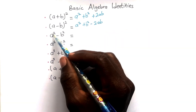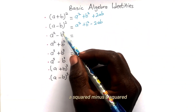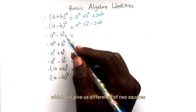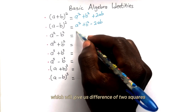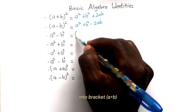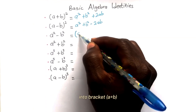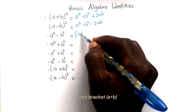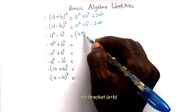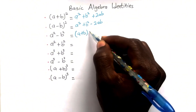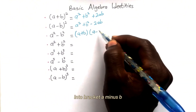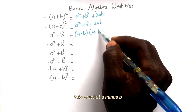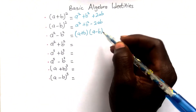a squared minus b squared, which is the difference of two squares, equals (a plus b) into (a minus b).